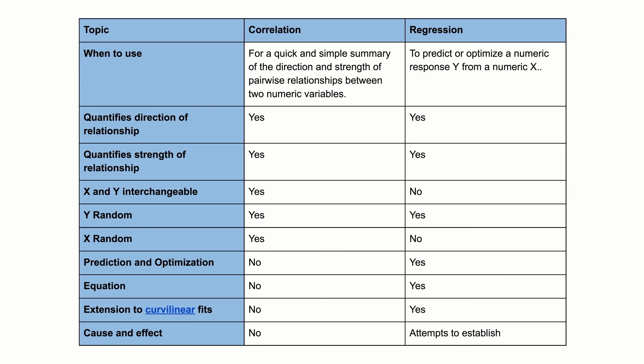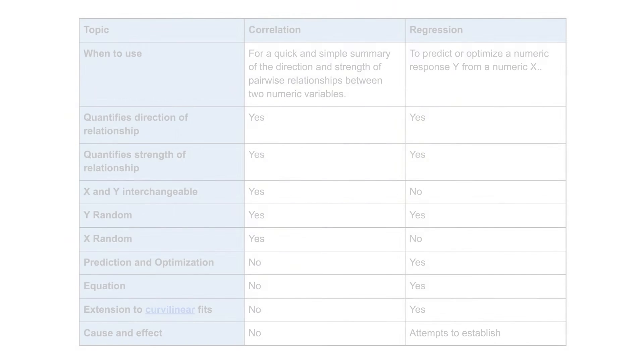In summary, correlation and regression have many similarities and some important differences. Regression is primarily used to build models to predict a response, while correlation is primarily used to quickly and concisely summarize the direction and strength of the relationship between two numeric variables.